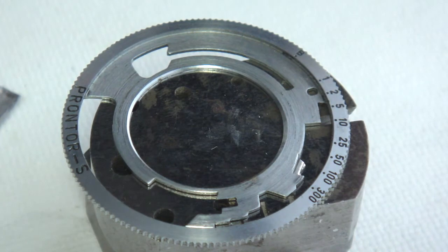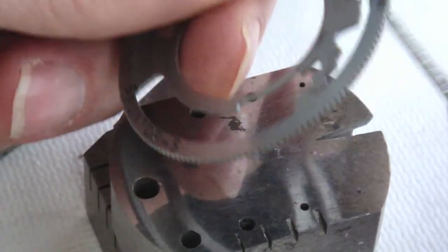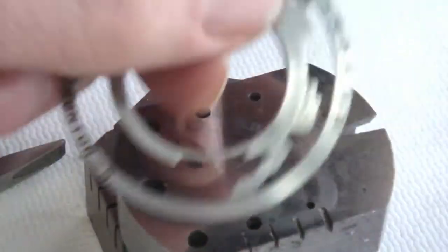If, after testing, the shutter speed tests out too fast, then some material can be taken off of the cam lobe with the use of a file. Work in small increments and test after each filing.